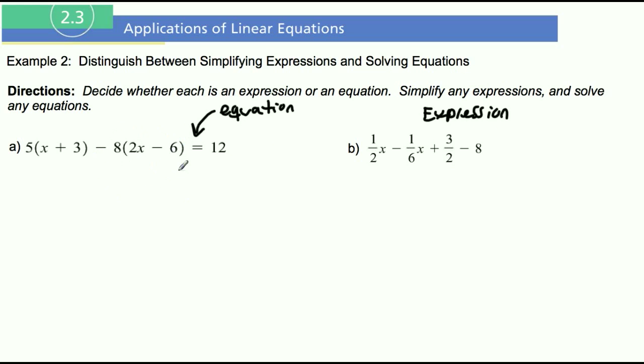All right, so let's first simplify the left side by doing the distributive property. So 5 times x is 5x, 5 times 3 is positive 15. Negative 8 times a positive 2x is negative 16x. Negative 8 times a negative 6 is a positive 48. And that equals 12.